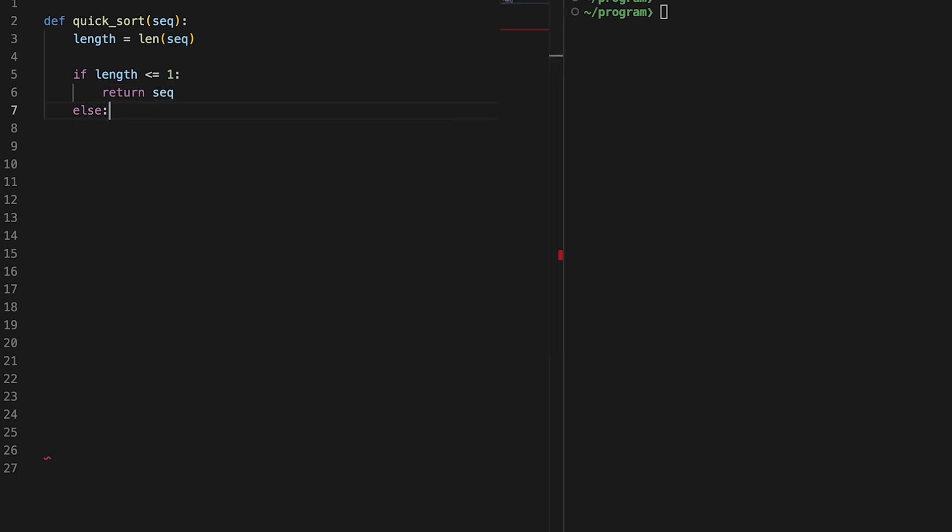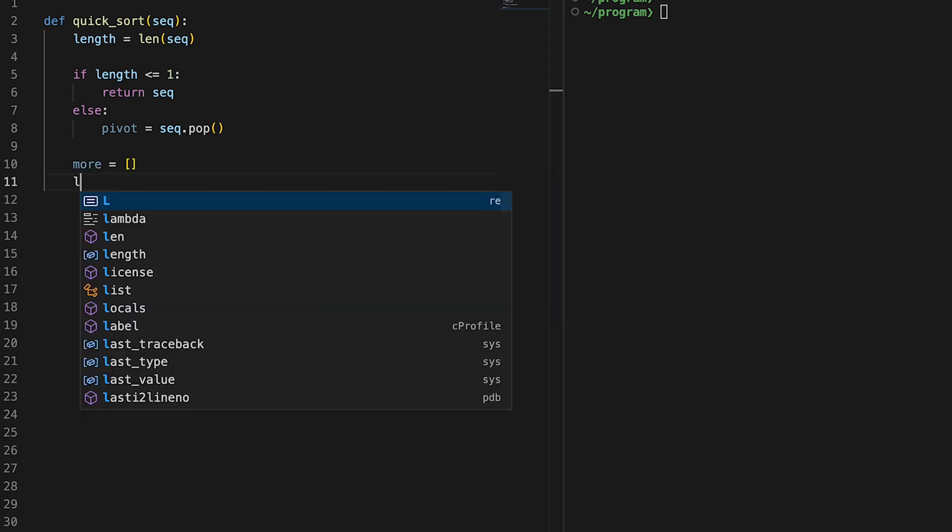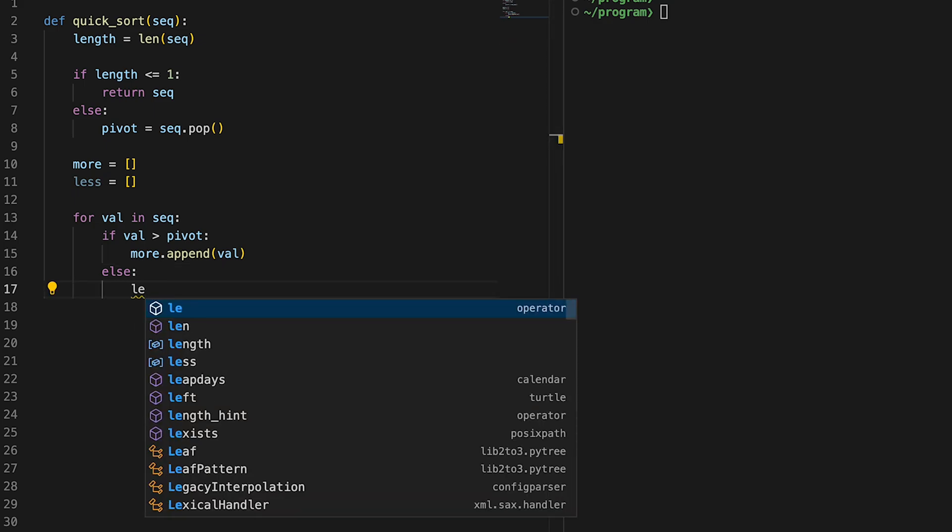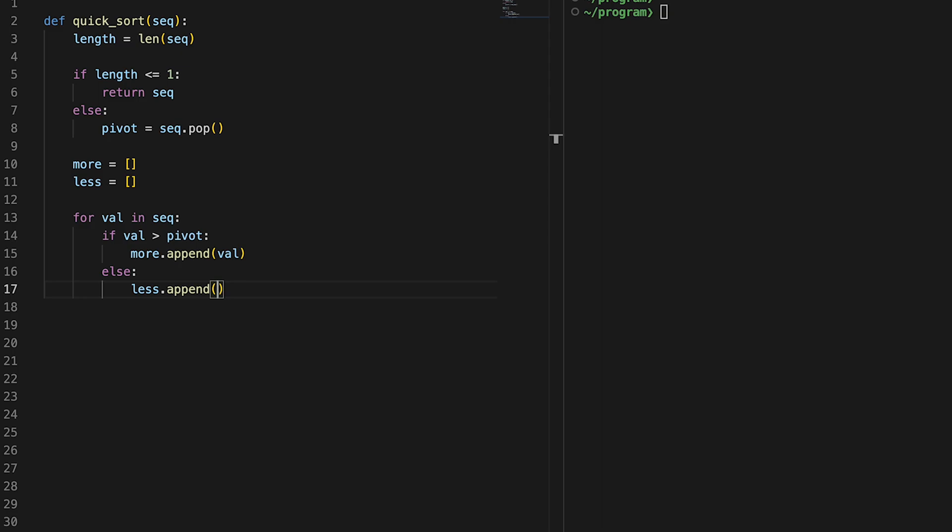If not, take the last value as the pivot: pivot equals sequence.pop. Prepare two arrays, one is more and the other is less. Start looping for var in sequence. If var is greater than pivot, add the current value to the more list. If not, add the current value to the less list.